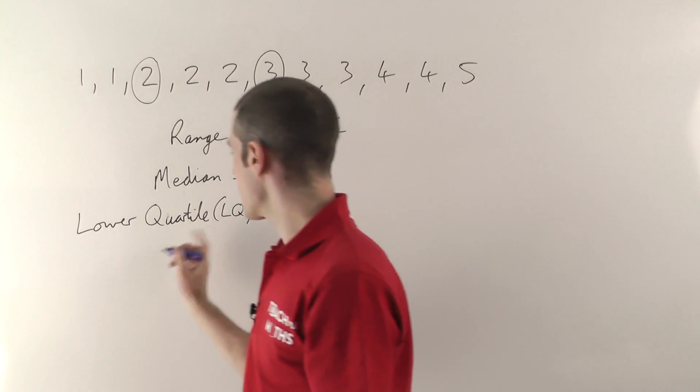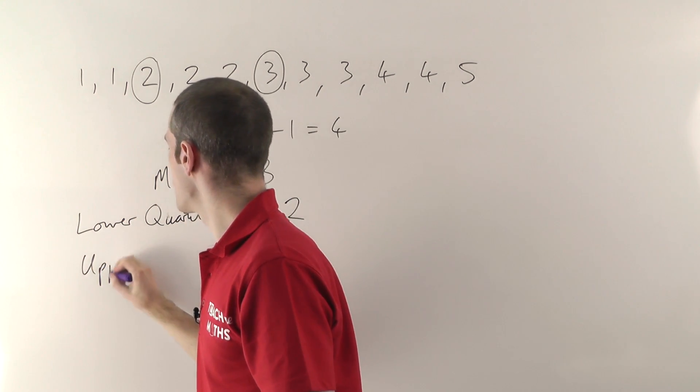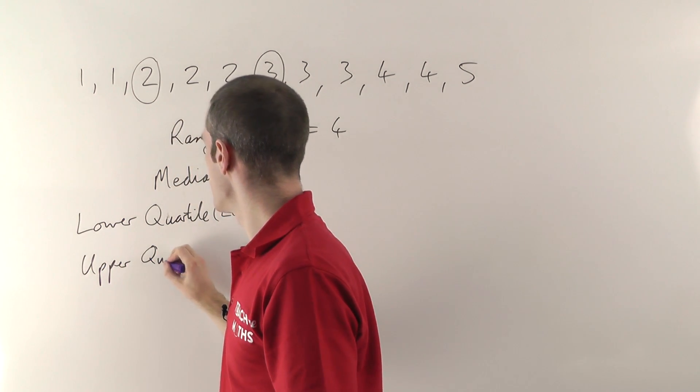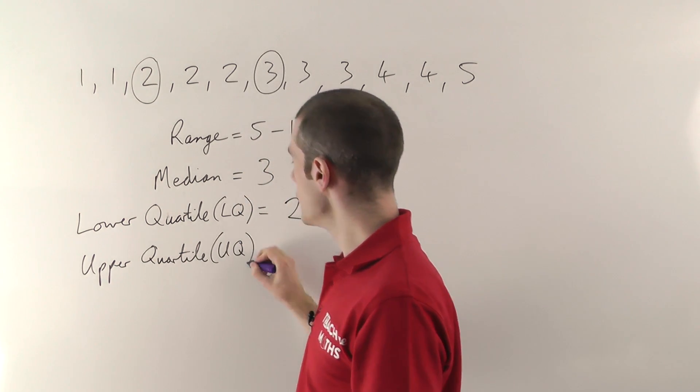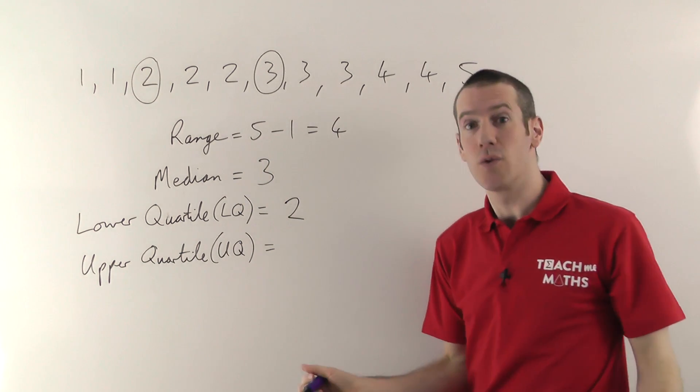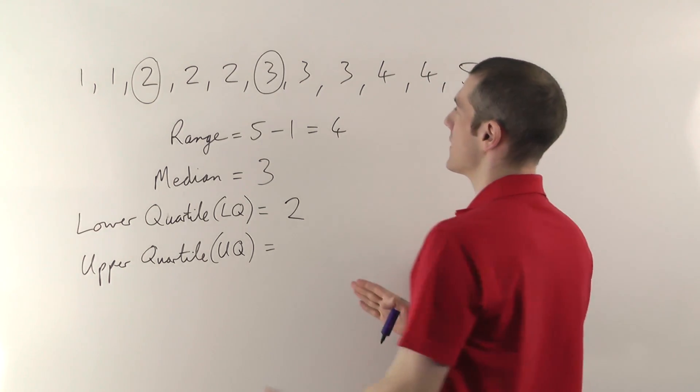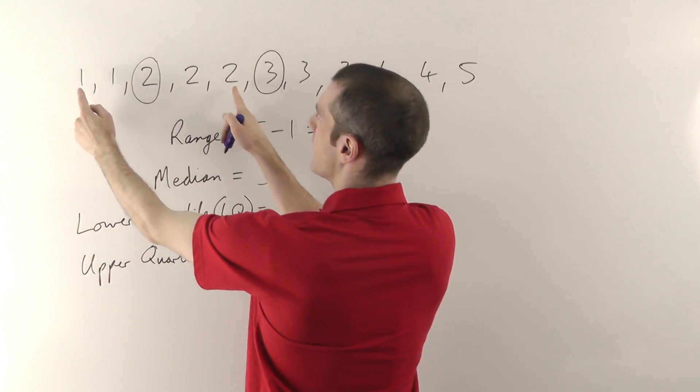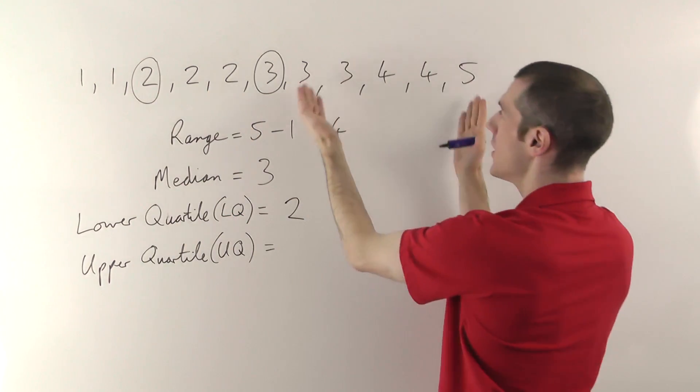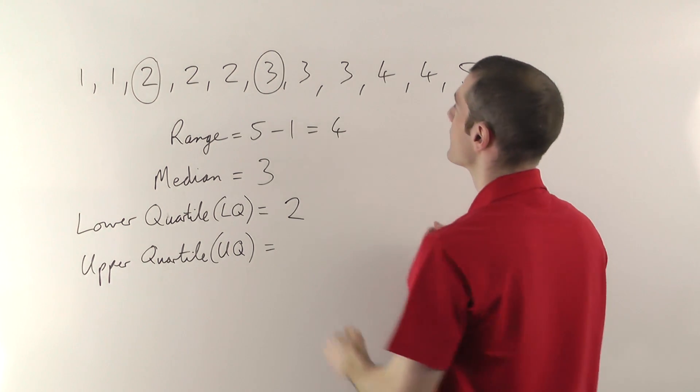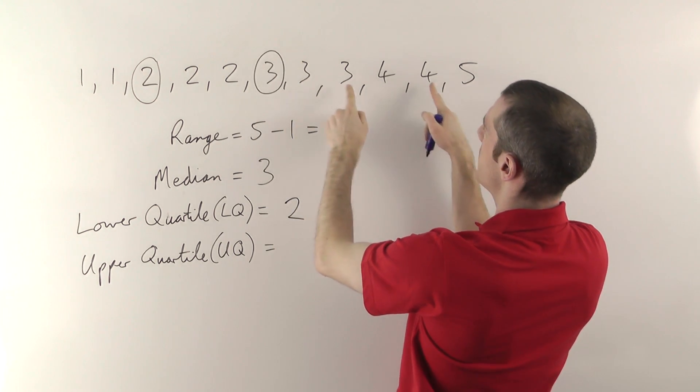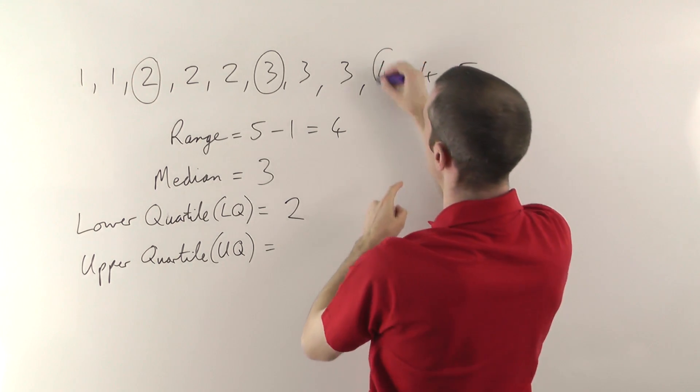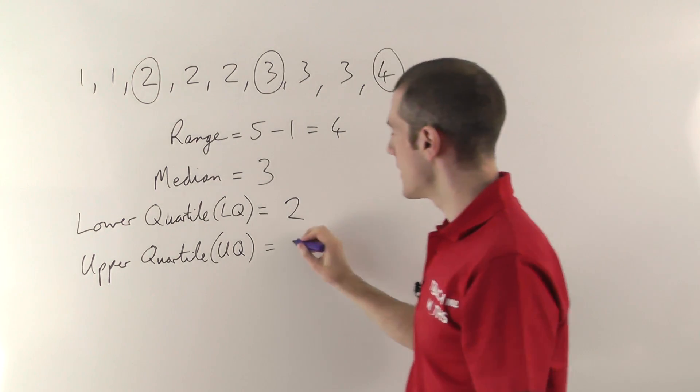You've probably figured out by now, if the lower quartile is the one that's a quarter of the way through, the upper quartile, often abbreviated to UQ, is the one that's 3 quarters of the way through. So again, like you did with the lower half, you pair your way in, you just take the upper half and you pair your way in. So don't include the median, start from these ones, pair, pair, that's the one in the middle. So the upper quartile in this case is 4.